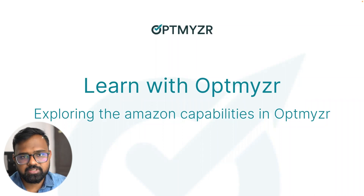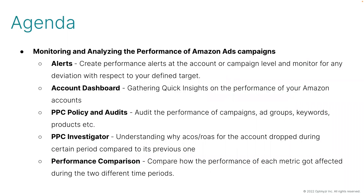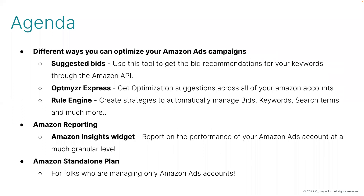We've categorized this session into four different sections. We'll talk about how you can monitor and analyze the performance of your Amazon Ads campaigns, how you can set up alerts and a couple of insight tools as well. Then we'll move to the different ways you can optimize your Amazon campaigns using Optimizer, and we'll also cover how you can create performance reports using Optimizer reporting.